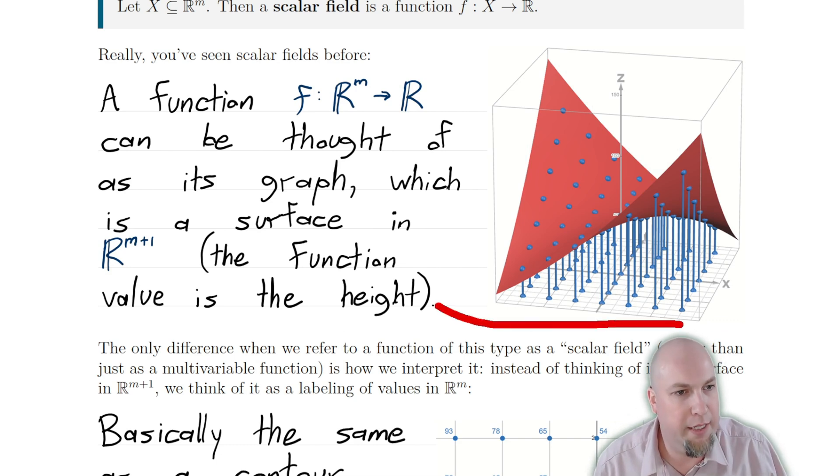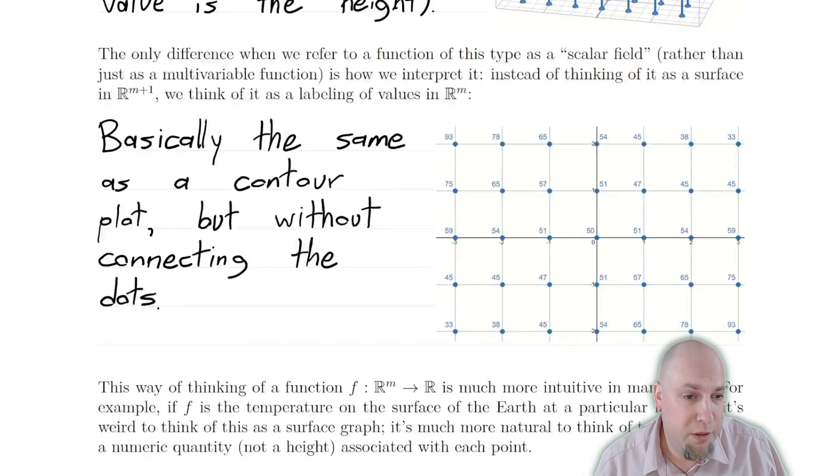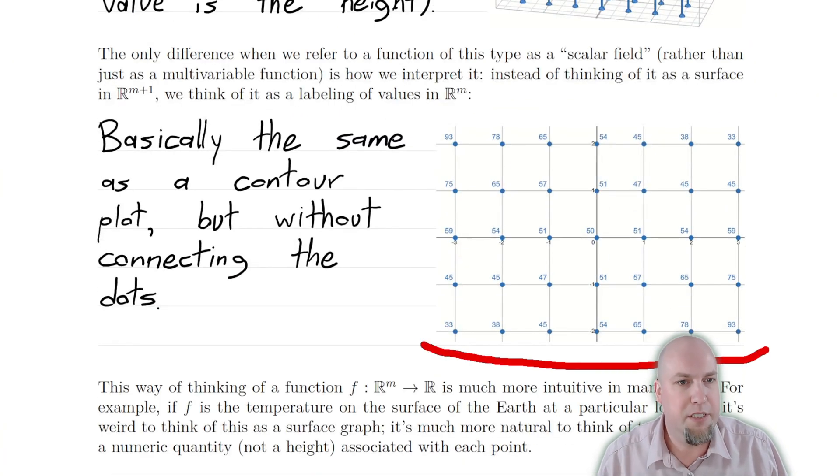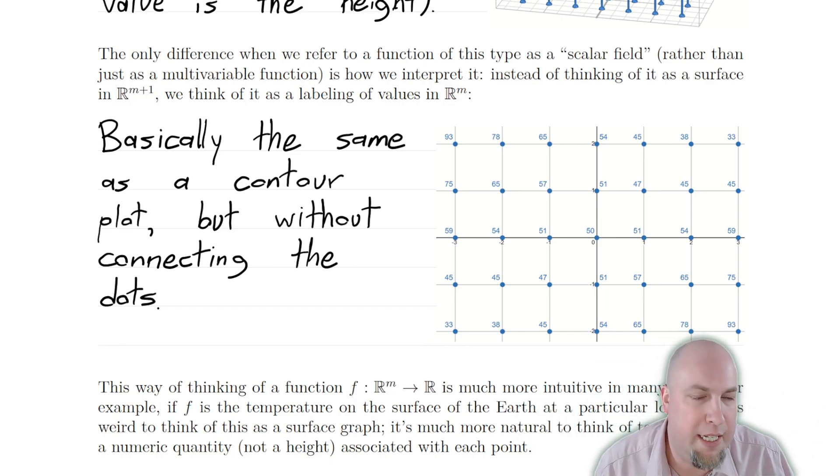Up here when we use graphs, we need a three dimensional graph if m was two. Down here, we only need a two dimensional plot if m is two. So it lets us omit the output dimension just by labeling the numbers that correspond to the output dimension.